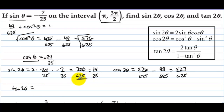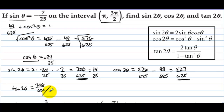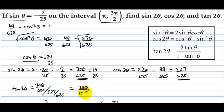Tangent of 2 theta equals sine of 2 theta over cosine of 2 theta, which is 350/625 over 527/625. Multiplying top and bottom by 625 gives 350/527.